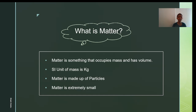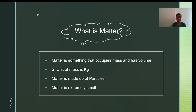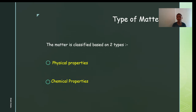The SI unit of mass is kilograms (kg). Matter is made up of several thousand particles — particles are like atoms. Particles are extremely small in size. Now let's look at the types of matter.